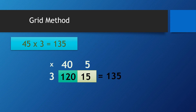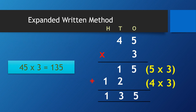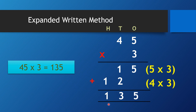Now we go to expanded written method. This method is very similar to the formal method, but there are differences. What is the meaning of H, T, and O? O means ones, T means tens, H means hundreds. Do you have hundreds in 45? No. Do you have hundreds in 3? No. Do you have hundreds in the partial results? Yes.